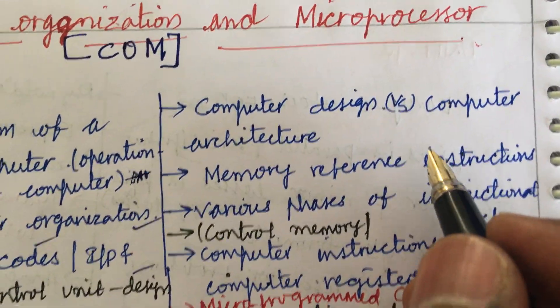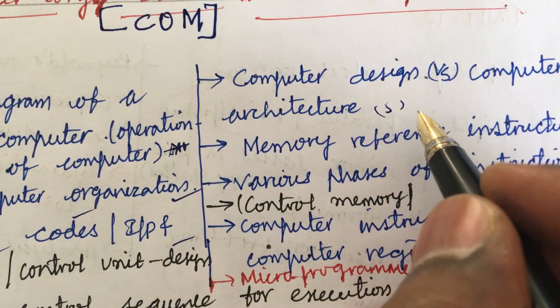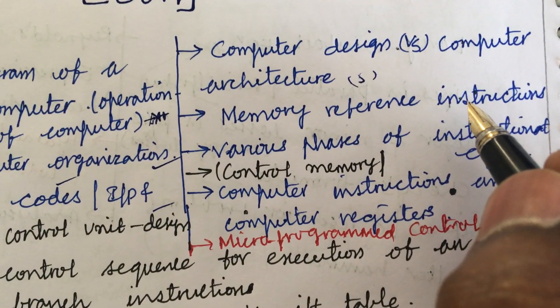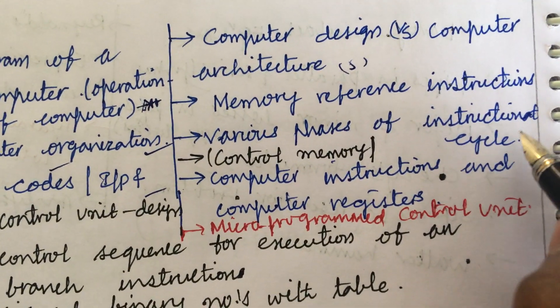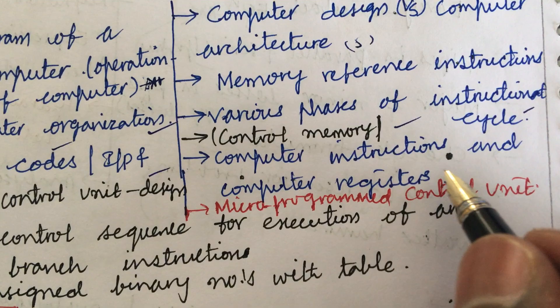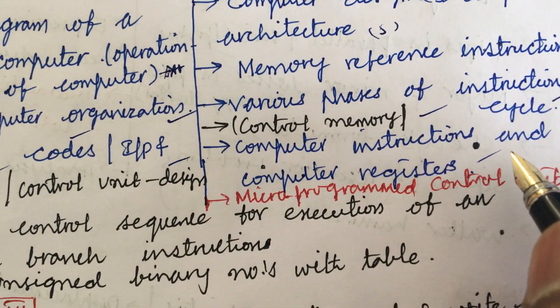Computer design versus computer architecture may be the five mark question. I do not expect direct ten mark question. Memory reference instructions may be the short question and the various phases of instruction cycle may be the long question. Define the term control memory may be the short question, computer instructions and computer registers may be also five mark question.